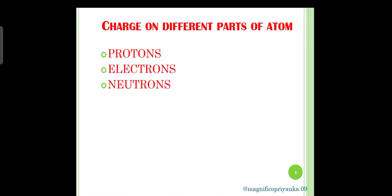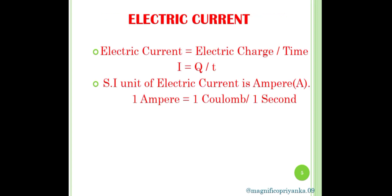Next is charge on different parts of atom. We know that atom is made up of protons, neutrons, and electrons. Protons have positive charge. Electrons have negative charge. Neutrons have no charge.